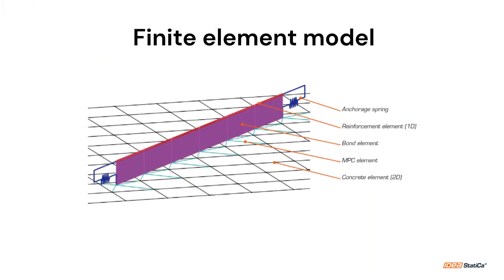Reinforcement is represented by 1D elements, the tension ties connected to the concrete represented by 2D elements — the continuous stress fields. Finite elements for concrete and reinforcement are first meshed independently and afterwards connected by multipoint constraints.